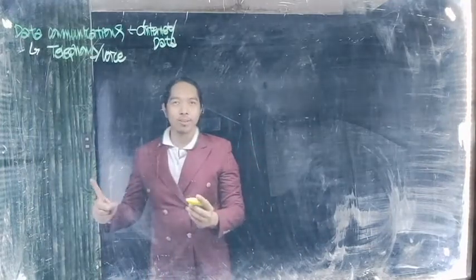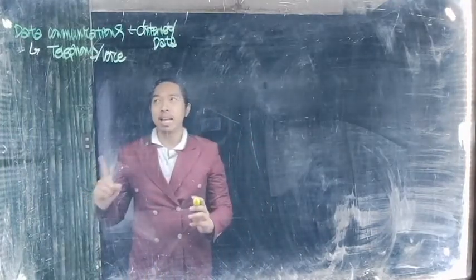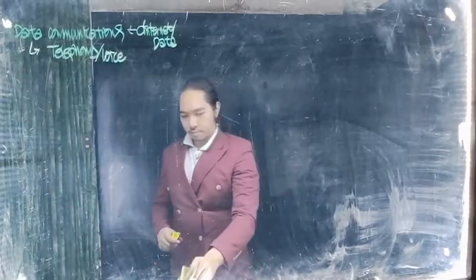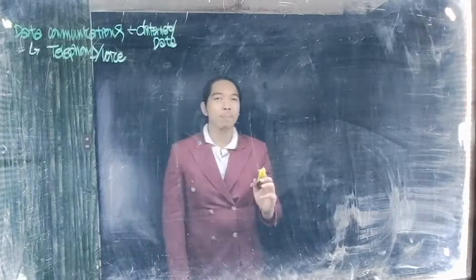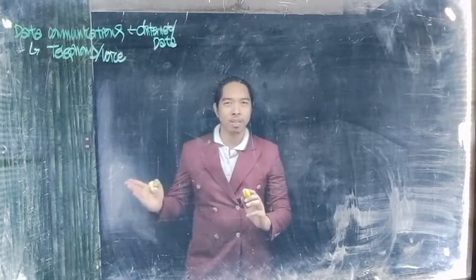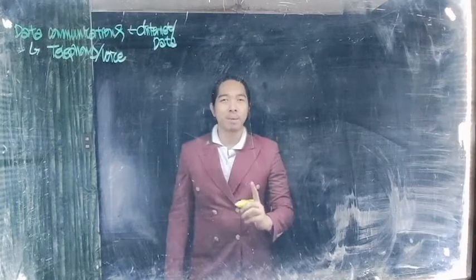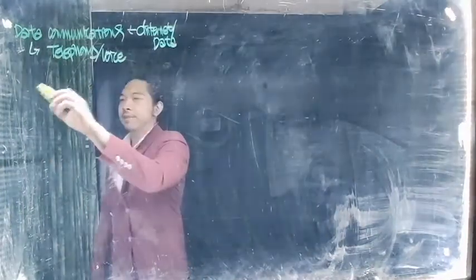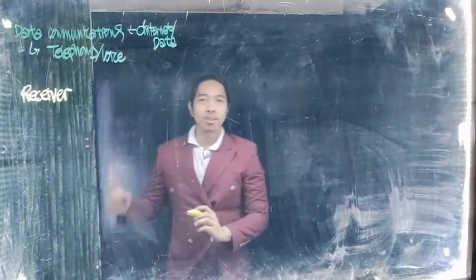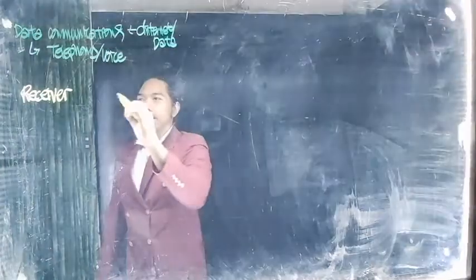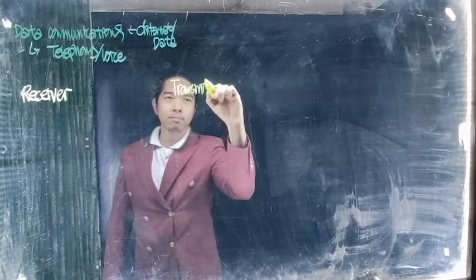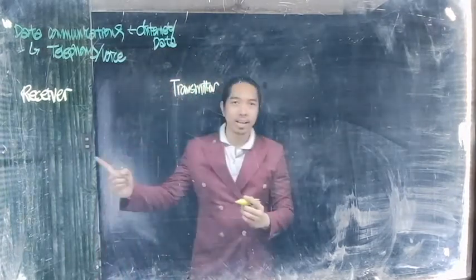So how does this work? Yung fundamentals nito, ano ba ang mga components ng isang communication system? Yung communication system, ang important is alam natin yung ating pinaka main blocks or basic blocks. So ano bang basic blocks? For communication system, ang pinaka basic blocks natin, meron tayo una receiver, and secondly, meron tayo transmitter. And actually, may connection between them.